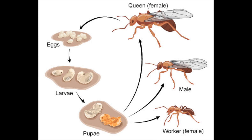Adult. The pupa emerges as an adult. The entire life cycle usually lasts from 6 to 10 weeks. Some queens can live over 15 years, and some workers can live for up to 7 years.